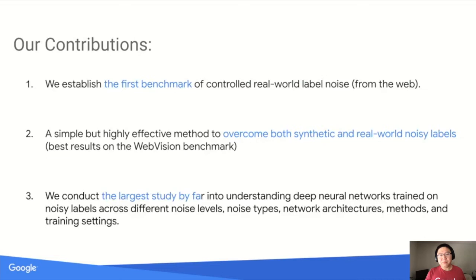To address this issue, we made three contributions in this work. First, we established the first benchmark of controlled real-world label noise from the web. Second, we proposed a simple but highly effective method to overcome both synthetic and real-world noise. Finally, we conducted the largest study by far into understanding deep neural network trained on noise labels.